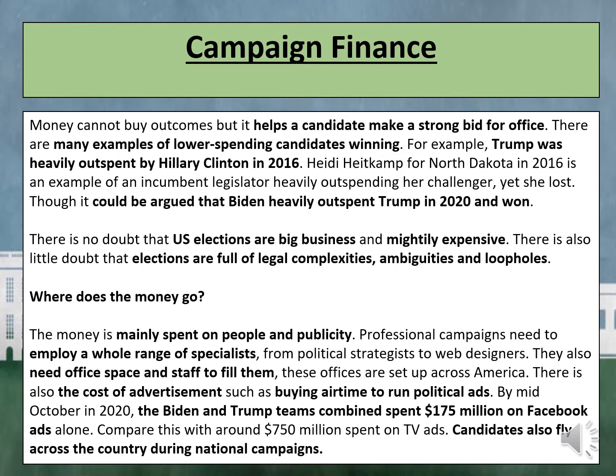There is also the cost of advertisement, such as buying air time to run political ads. By mid-October in 2020, the Biden and Trump teams combined spent $175 million on Facebook ads alone. Compare this with around $750 million spent on TV ads. Candidates also fly across the country during national campaigns to try and win over as many voters as possible.